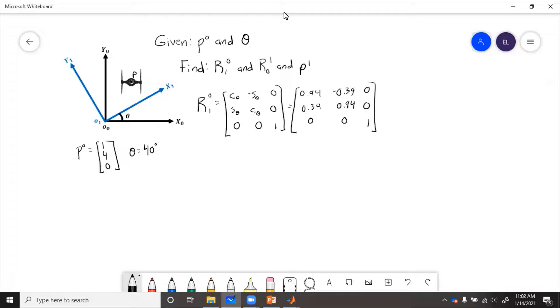Now in order to get P1, we remember that P1 equals R01, P0. So first we have to get R01, which is going to be the transpose.